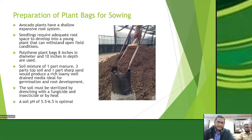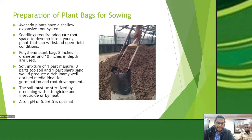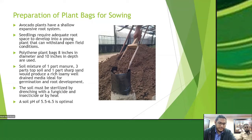The next important step is to prepare bags or pots for sowing. At St. Augustine Issues we use plant bags because avocado plants have a shallow, expansive root system requiring space for roots to develop. We use bags 8 inches in diameter and 10 inches in depth, filled with a soil mixture of one part manure, three parts topsoil, and one part sharp sand. This mix produces the ideal environment for germination and root development, retaining the right moisture with a good nutrient load.